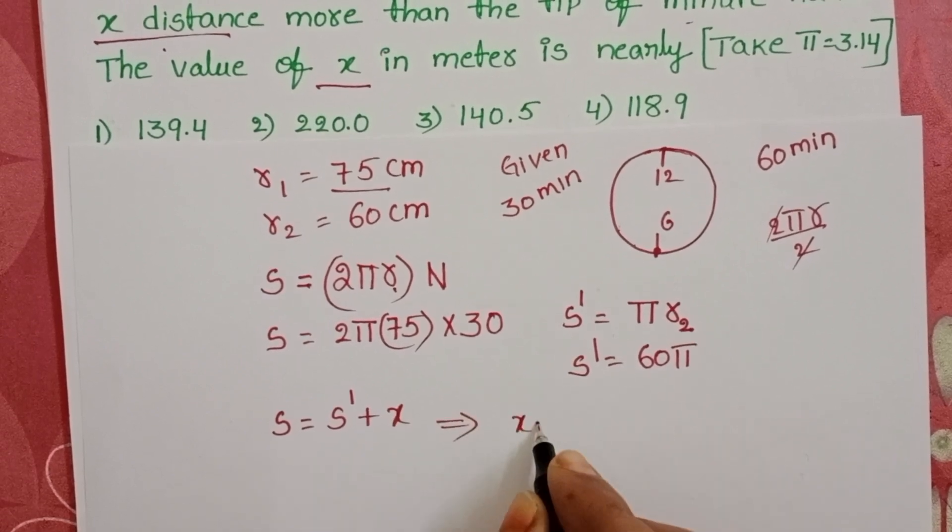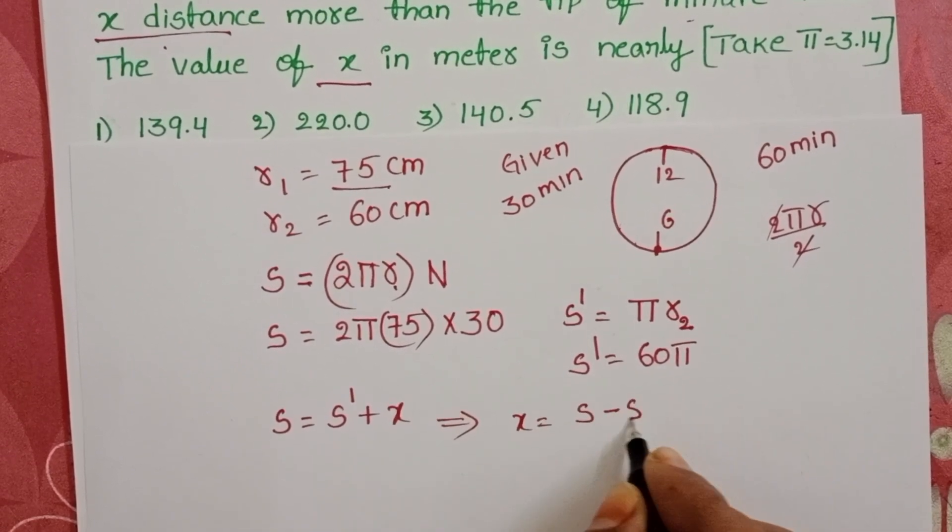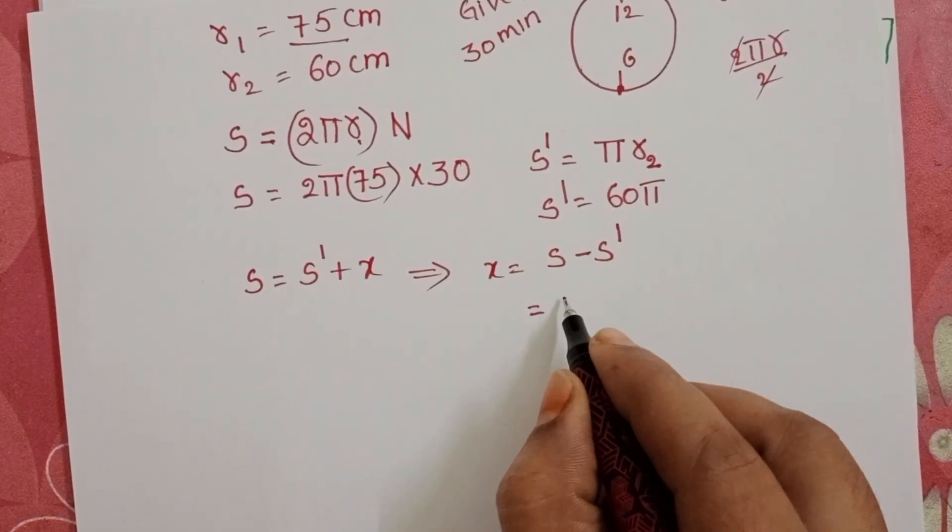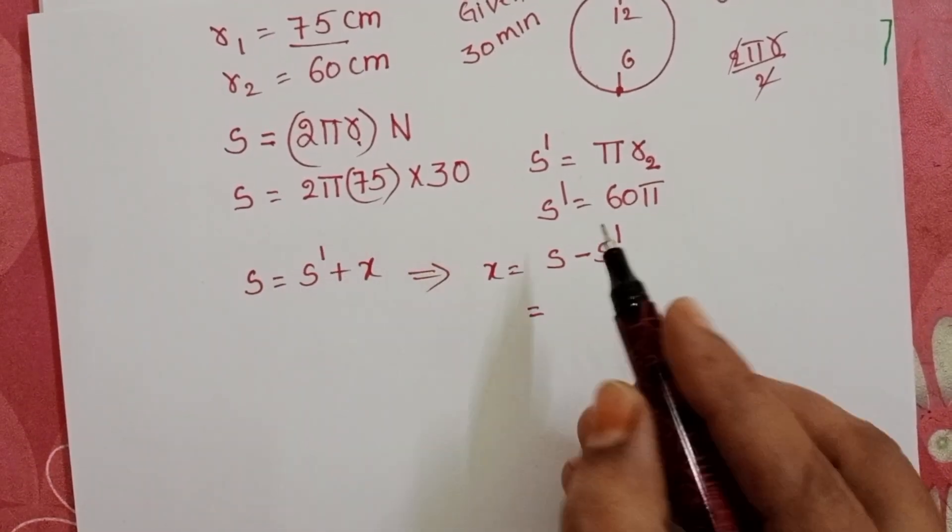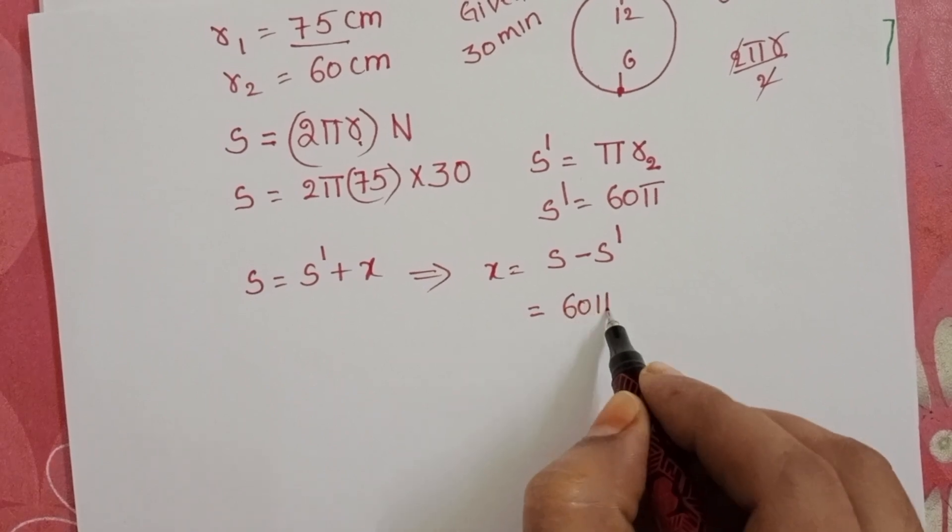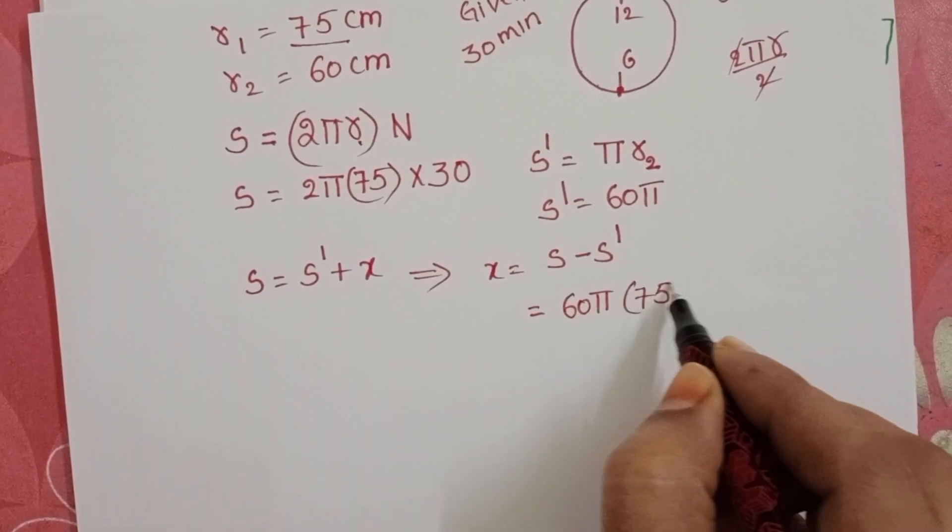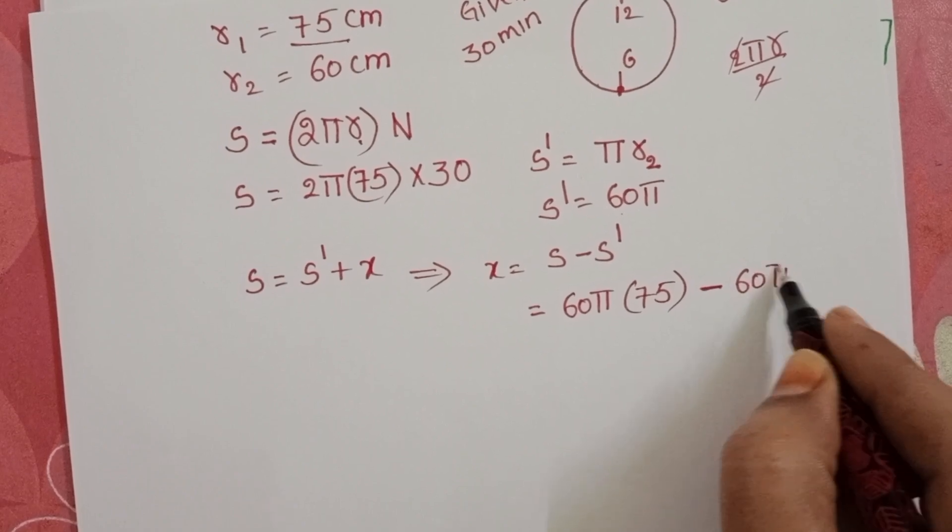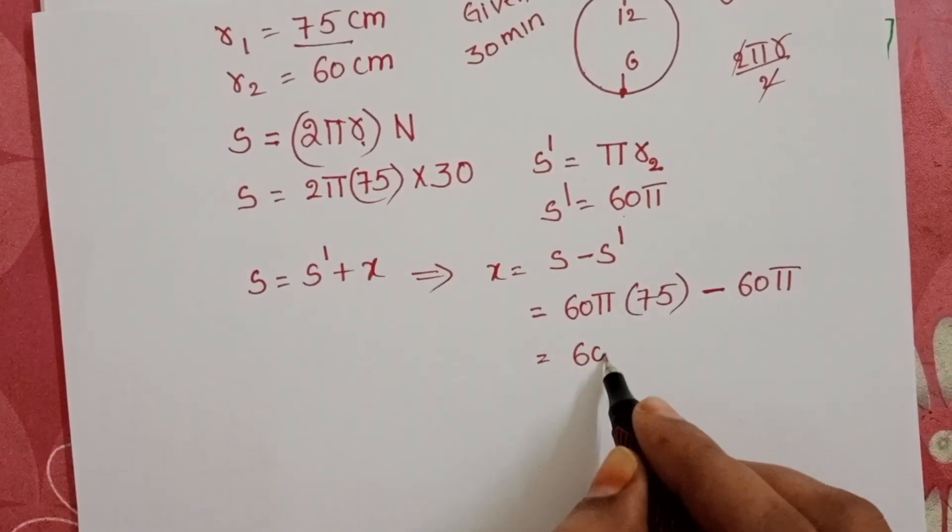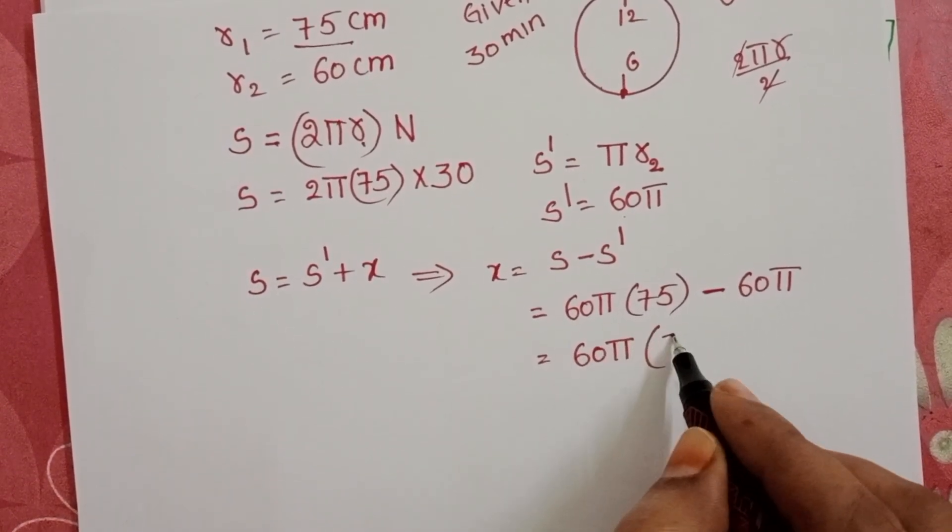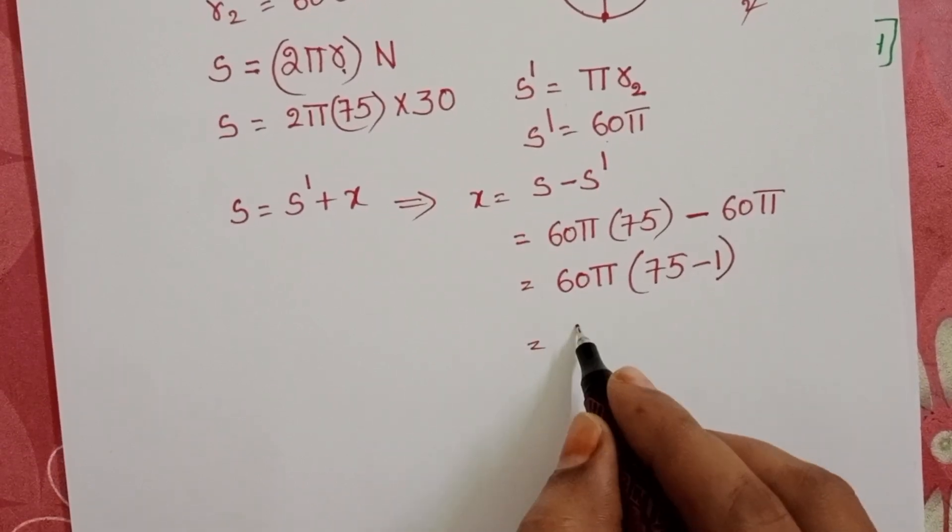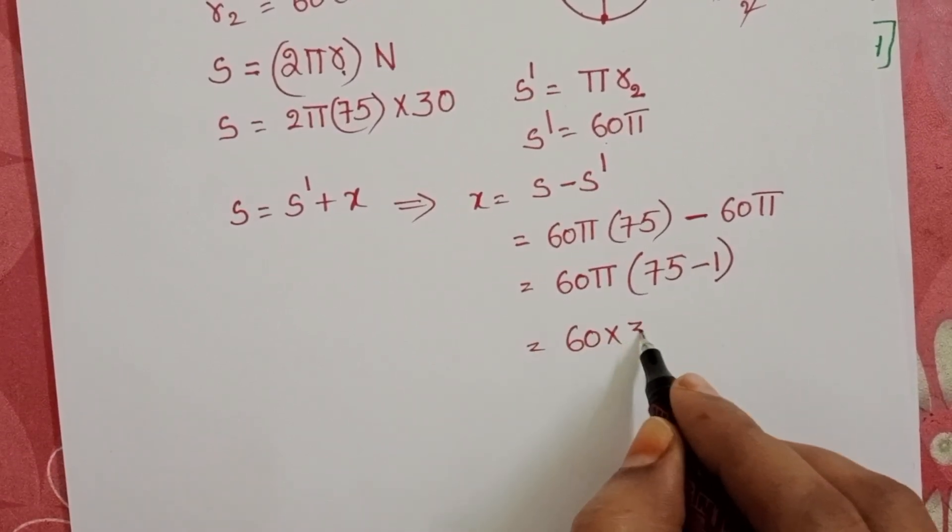From this, x equals S minus S dash. In place of S: 2π into 30 into 75, minus S dash equals π into 60. Take 60π common: 60π into (75 minus 1).